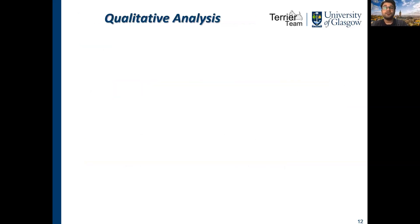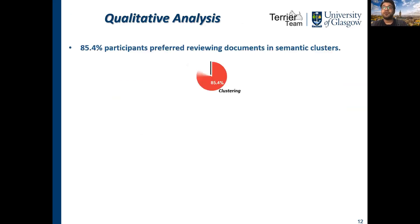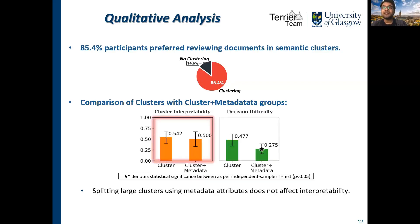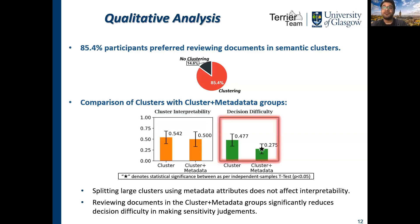According to the follow-up questions in our studies, 85.4% of participants preferred reviewing documents in semantic clusters. We also observed that splitting large clusters into cluster-plus-metadata groups does not negatively affect the human interpretability of the clusters. Moreover, reviewing documents in the cluster-plus-metadata document groups can significantly reduce the difficulty for reviewers in making sensitivity judgments. Therefore, our study shows that reviewers prefer to review documents in semantic clusters, and smaller clusters also make it easier for reviewers to make sensitivity judgments.